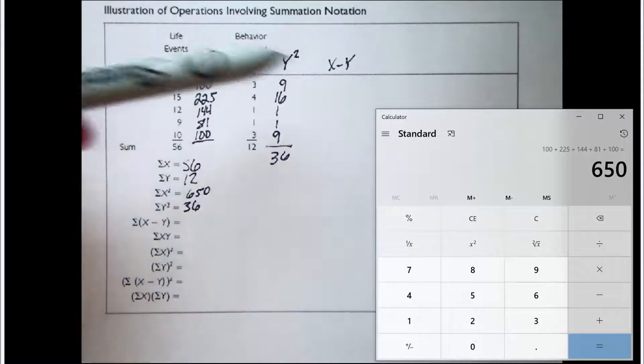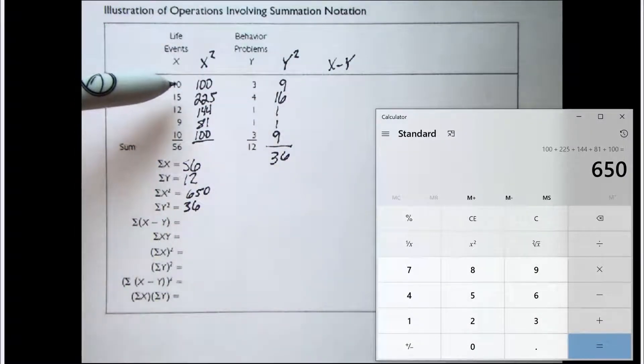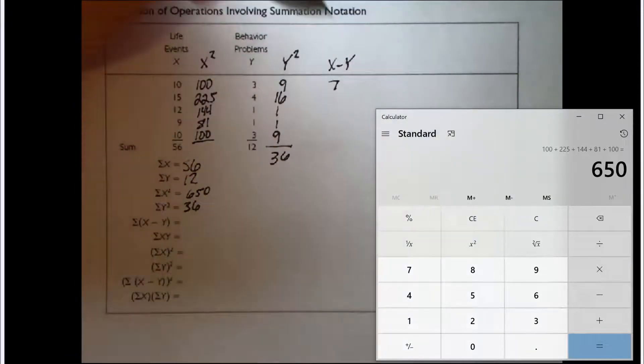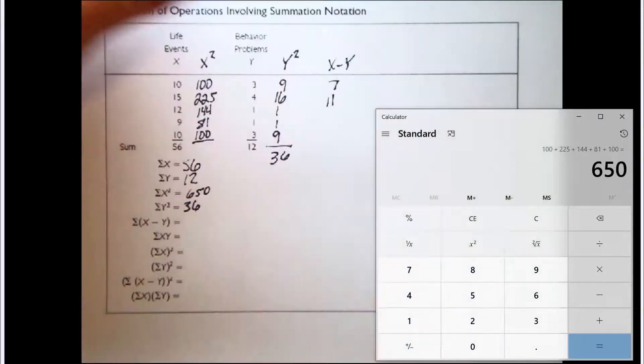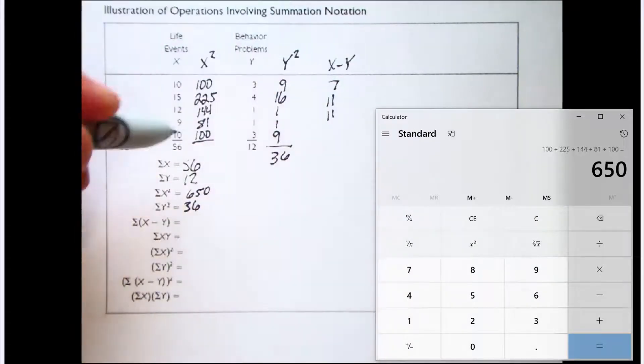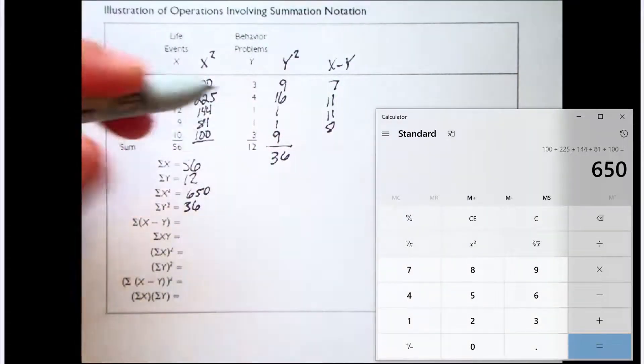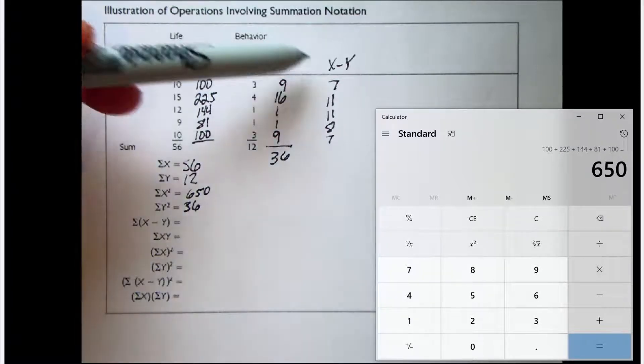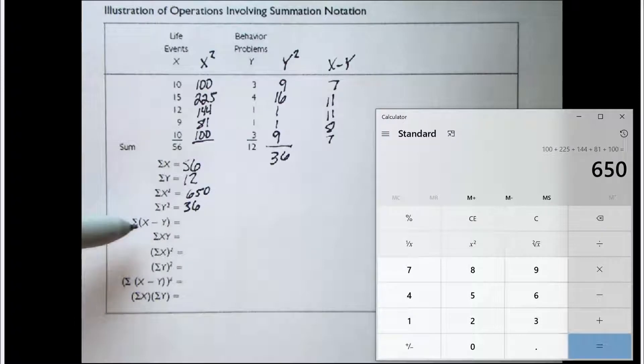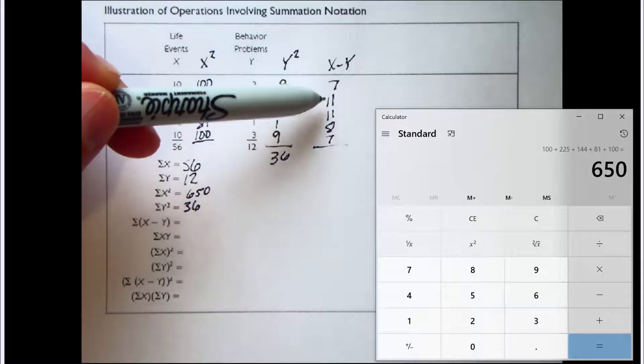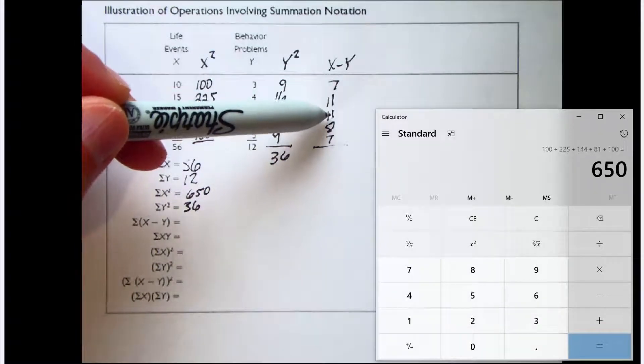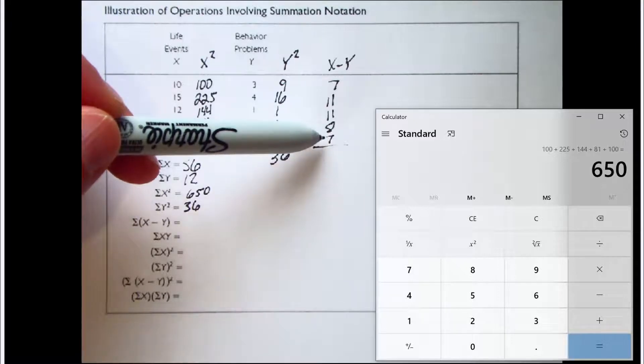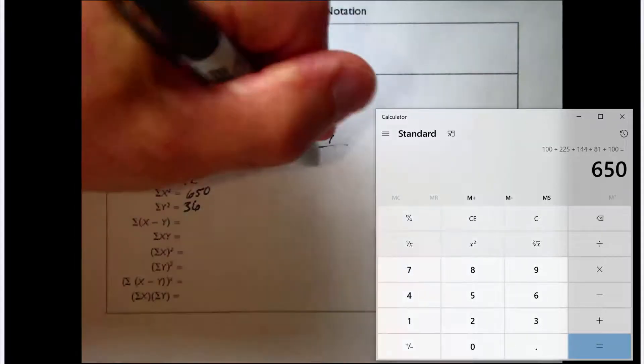So for step two, we created that column, and now we're going to do all the subtraction that's necessary. 10 minus 3 is 7, 15 minus 4 is 11, 12 minus 1 is 11, 9 minus 1 is 8, 10 minus 3 is 7. Now that we're done with step two, we see if we're ready for step three. We ask ourselves, do we have a column labeled with what we've been asked to sum up? And we do. So we are ready for step three. So all we need to do now is sum up that column. 7 and 11 is 18, 28, 29, 37. 37 and 7 would be 44.